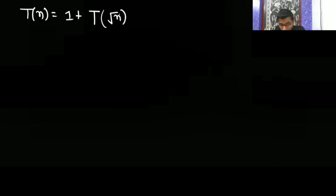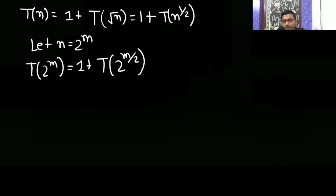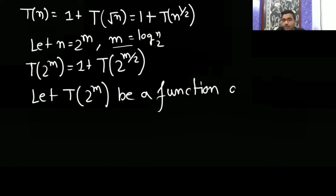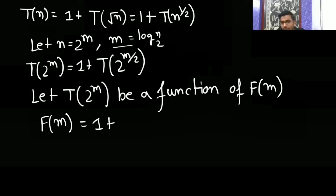Since this is not in the master theorem, let n = 2^m (or any power of 2). In place of n, write T(2^m) = 1 + T(2^(m/2)). Now let T(2^m) = f(m). So f(m) = f(m/2) + 1. Now this is in master theorem form where whatever is in the power becomes the function argument.